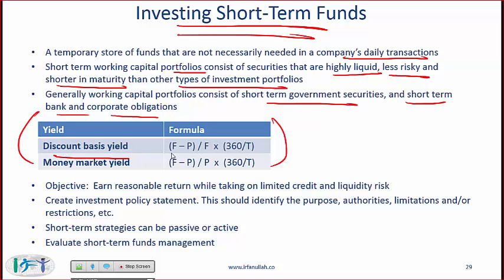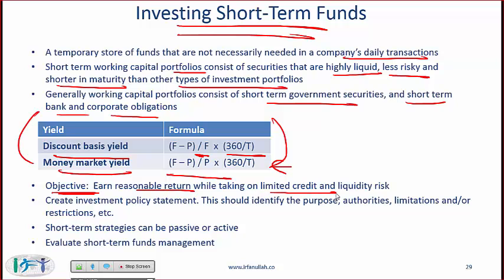When you invest short-term funds, you need to know the yield you are getting. The bank discount yield is: (face value minus price) divided by face value, multiplied by (360 over T). Government T-bills are a very popular short-term investment in most countries. If investing in money market instruments, you also need to know the money market yield. The objective of short-term investing is to earn a reasonable return while taking on limited credit and liquidity risk — you invest in safe, liquid instruments so you can sell at market price if needed.